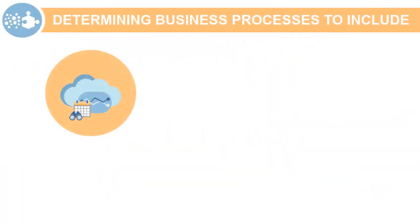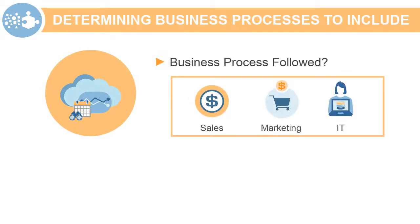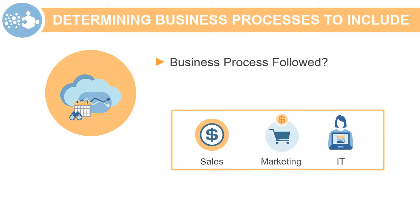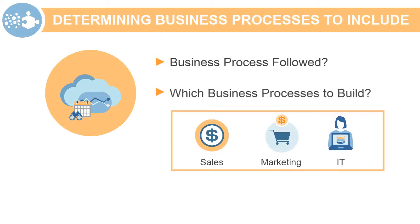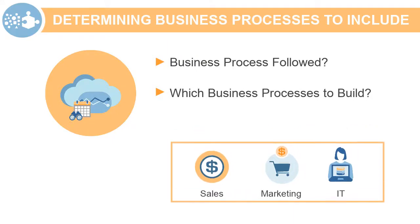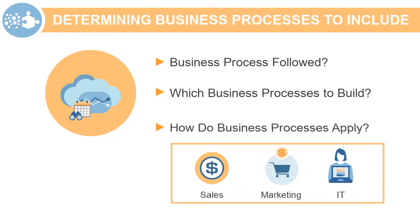Confirm whether all business units within your organization follow the business processes you identified. If the processes differ between business units, determine if you want to keep the current processes or adopt new ones. If you choose to implement different solutions by business unit, then identify those differences and which business units they apply to.